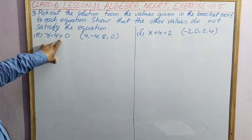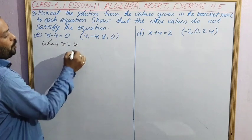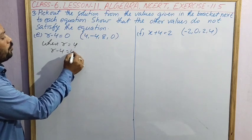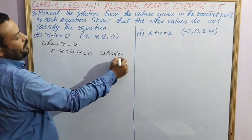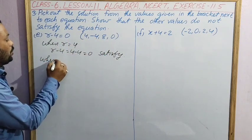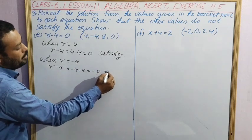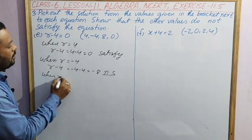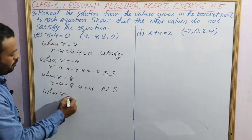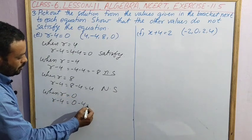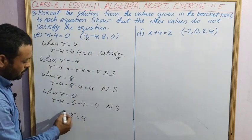Question E: equation is r minus 4 equal to 0. Values given are 4, minus 4, 8 and 0. When r equal to 4, r minus 4, that is 4 minus 4 equal to 0. Left hand side is 0, right hand side is also 0, so this one satisfies the equation. When r equal to minus 4, r minus 4 is minus 4 minus 4, that is minus 8. Not satisfy. When r equal to 8, r minus 4 equal to 8 minus 4 equal to 4, not satisfying. When r equal to 0, r minus 4 equal to 0 minus 4 equal to minus 4, also not satisfying. Only r equal to 4 is the correct answer.